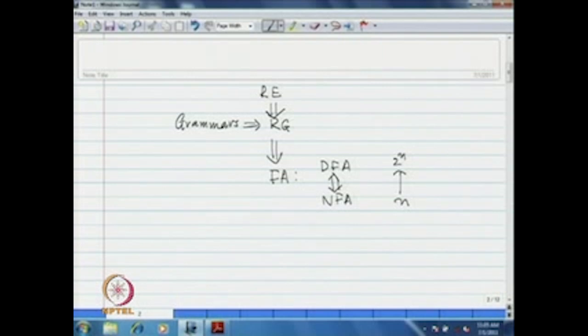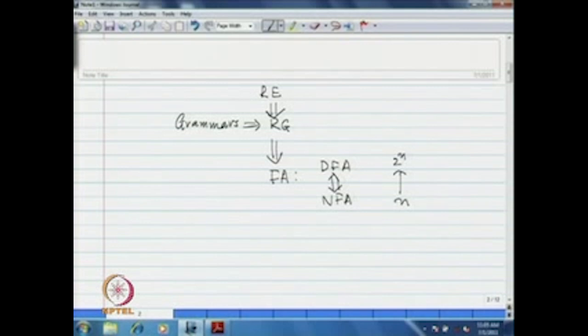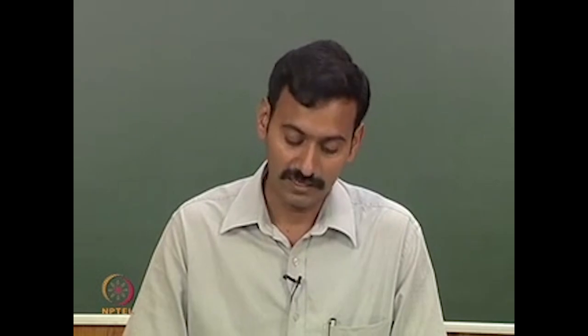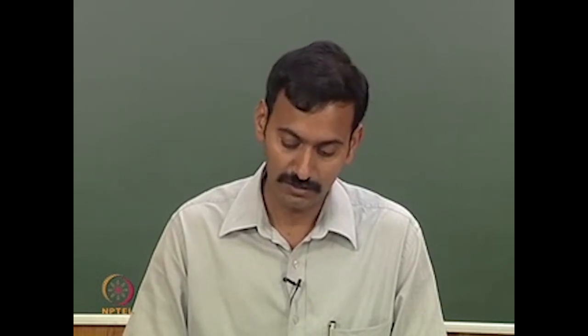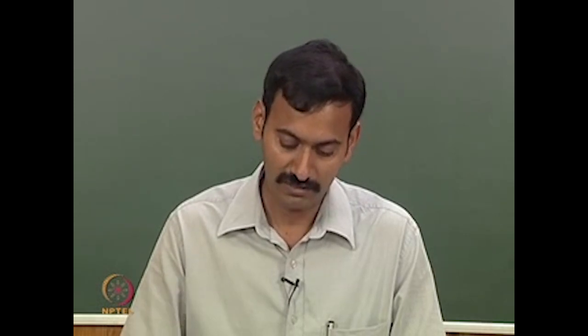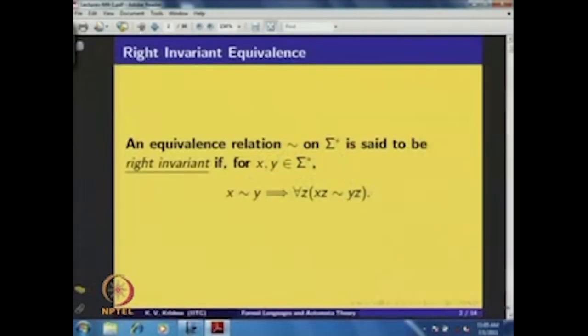In this direction we require one important tool called the Myhill-Nerode theorem, which I will be discussing in this lecture. This is a very important characterization for the languages accepted by DFA. Eventually, the language accepted by a DFA is a regular language, so this is a very important characterization for regular languages. In this lecture I will concentrate on the Myhill-Nerode theorem, and to introduce that theorem I require some basic definitions in that direction.